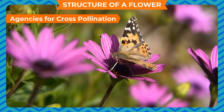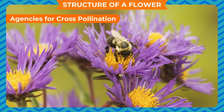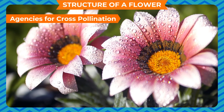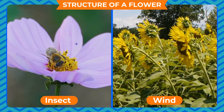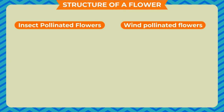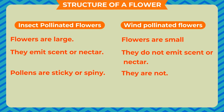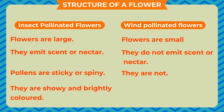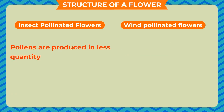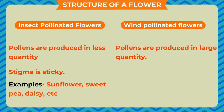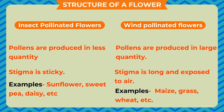Agencies for Cross-Pollination: Pollination in flowers of land plants is normally carried out by insects and wind, and some flowers are also pollinated by animals. Insect-pollinated flowers are large, emit scent or nectar, have sticky or spiny pollen, are showy and brightly colored, produce pollen in less quantity, and have sticky stigmas. Examples: sunflower, sweet pea, daisy. Wind-pollinated flowers are small, do not emit scent or nectar, produce pollen in large quantity, and have long stigmas exposed to air. Examples: maize, grass, wheat.